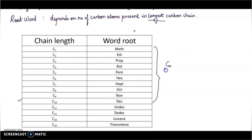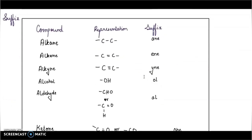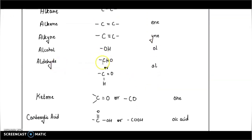You have to learn all these names. Moving on, we come to the suffix part. The root word is followed by a suffix which represents the nature of the bond between carbon atoms as well as the functional group present. Alkane has a single bond, suffix '-ane'. Alkene has a double bond, suffix '-ene'. Alkyne has a triple bond, suffix '-yne'. Alcohol has -OH, suffix '-ol'. Aldehyde is CHO, suffix '-al'. Carboxylic acid is COOH, suffix '-oic acid'.